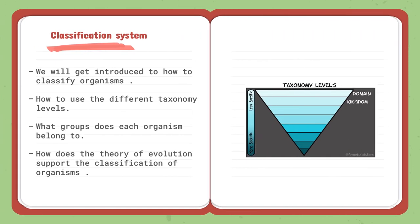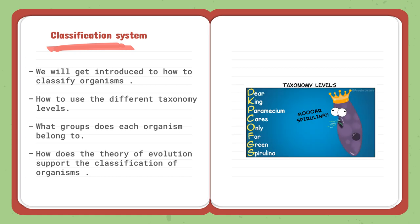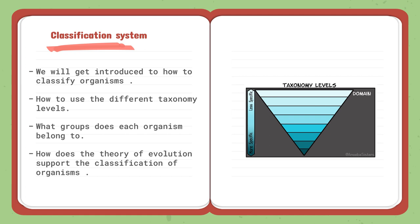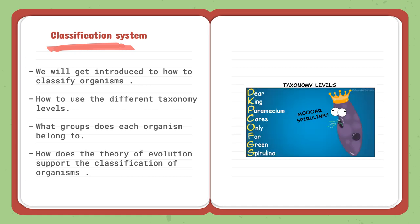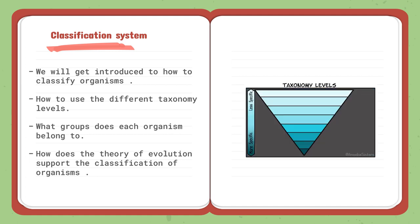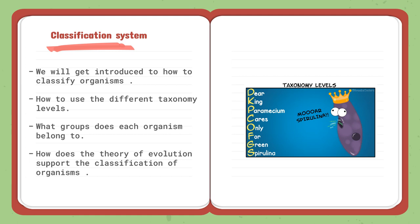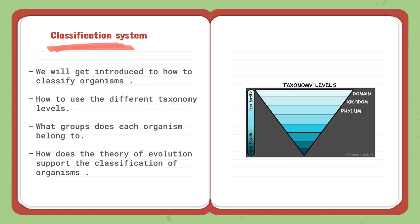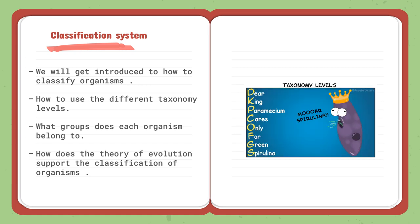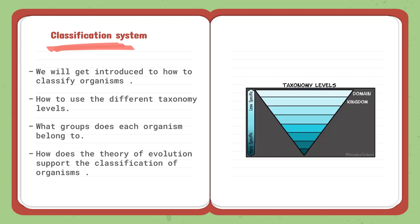The second lesson is Classification System. We will get introduced to how to classify organisms — we have species, genus, domains, and kingdoms, and we all classify into different groups. These groups correspond to different taxonomy levels that we will learn more about. We will see what group each organism belongs to, and how we can name organisms using scientific names, binomial nomenclature, or the Linnaean naming system. Then we will explain how the theory of evolution supports the classification of organisms and how coming from a common ancestry helps support that classification.